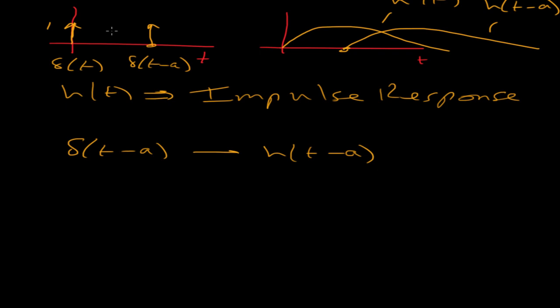Now what happens if I change the strength of the impulse to k? So instead of having an area of one, it has an area of k. The strength now of the impulse is k delta t minus a. Now because the system is linear, the impulse response just gets scaled by the same amount. We've used here time invariance and scaling to reach this conclusion.